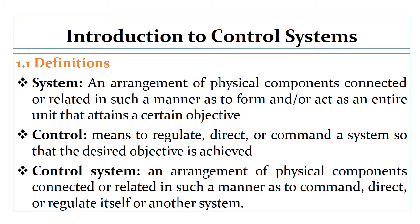Definition number three is control system — a control system is an arrangement of physical components connected or related in such a manner as to command, direct, or regulate itself or another system. In other terms, a control system is a system consisting of a number of components connected together to perform a specific function in which the output is controlled by the input.